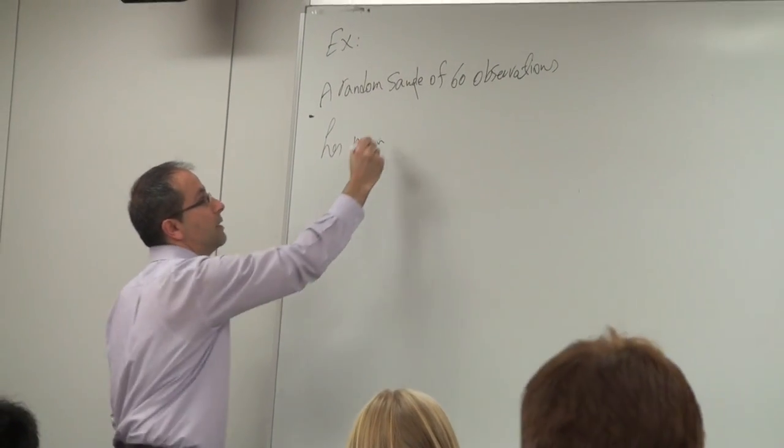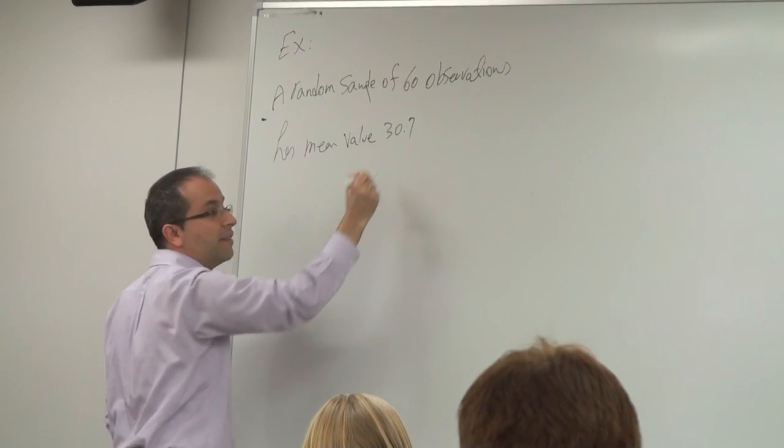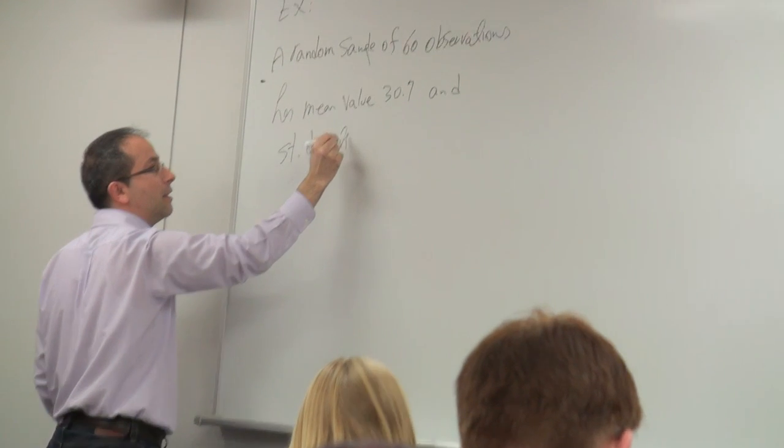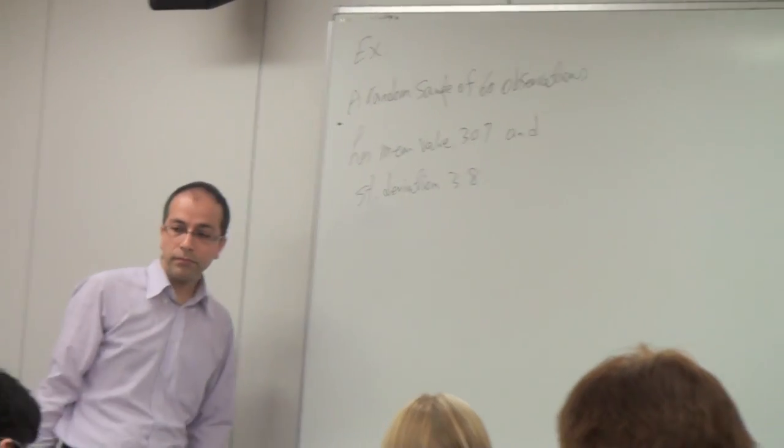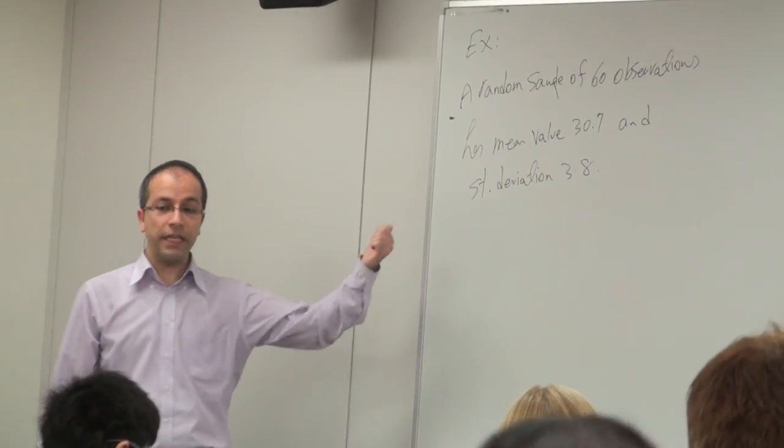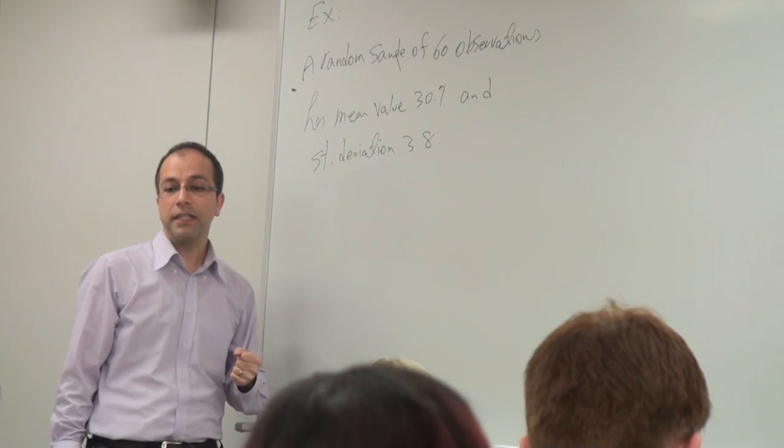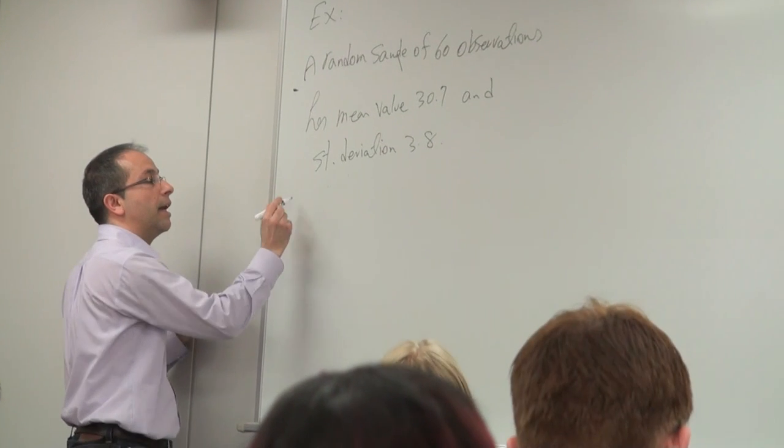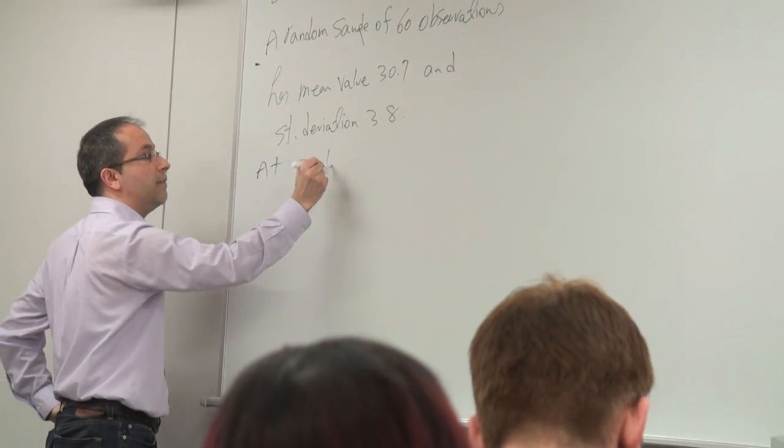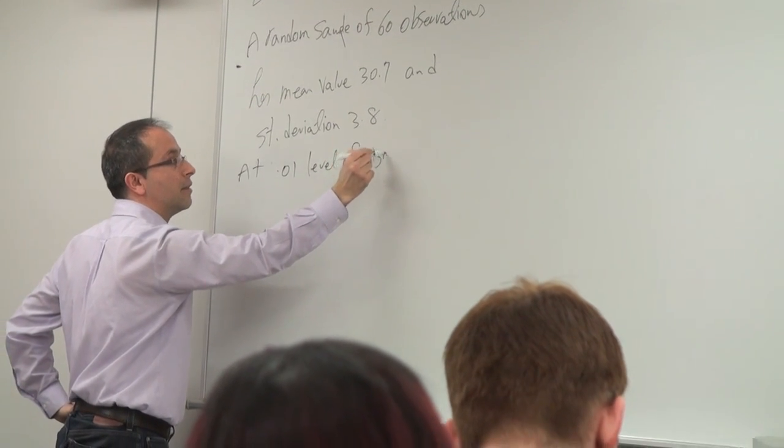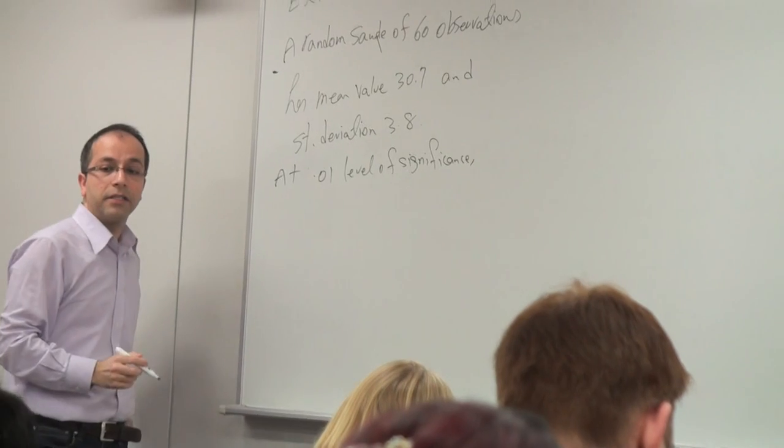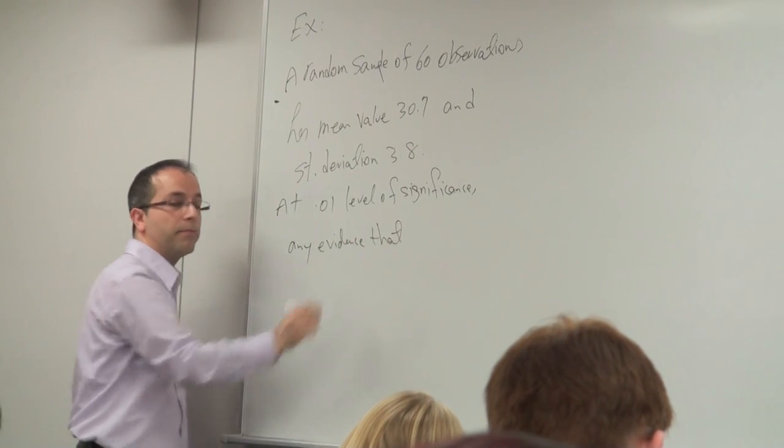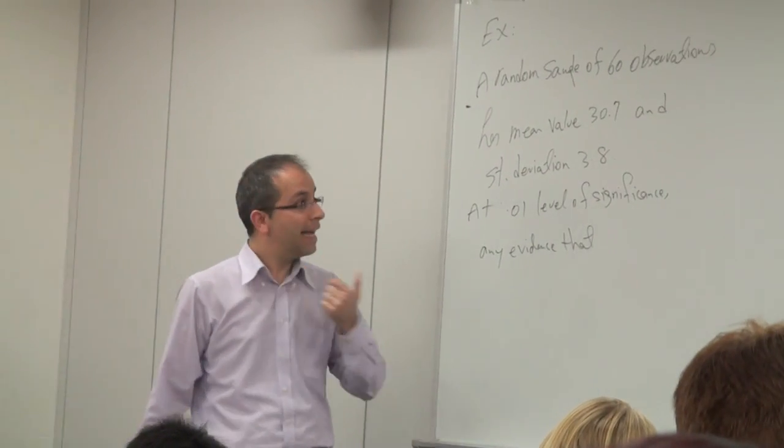The sample has a mean value of 30.7 and standard deviation 3.8. The question is: at 0.01 level of significance, is there evidence that the population mean is at least 32?